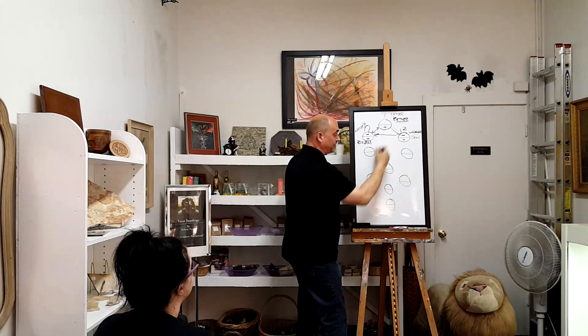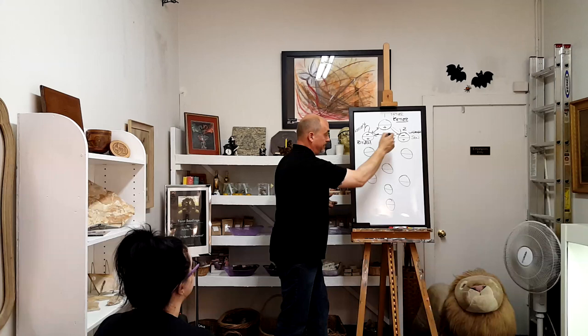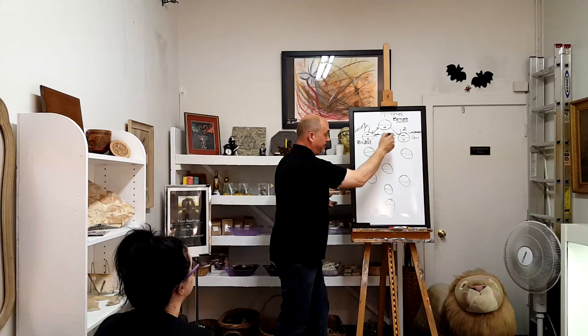I wanted you to see that the seed of life is present here, as well as a six-pointed object. If you put that little Da'at back in here — like the little Star of David — you can see it: triangle, triangle, triangle.